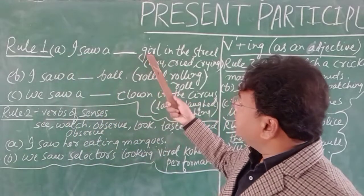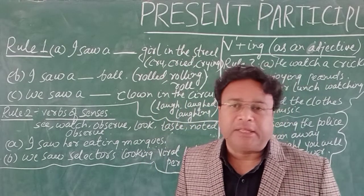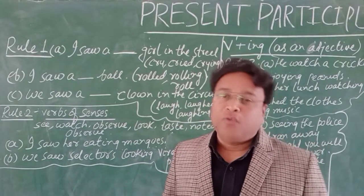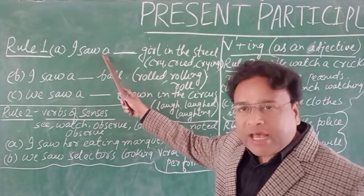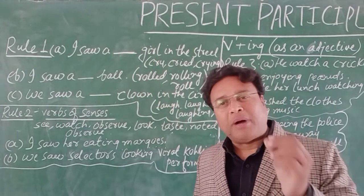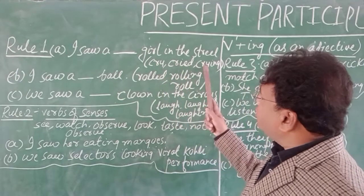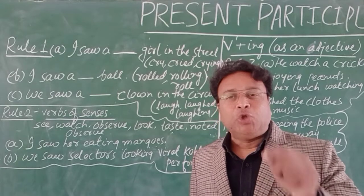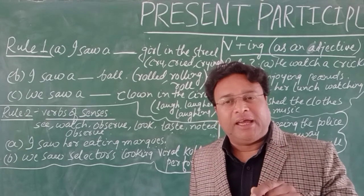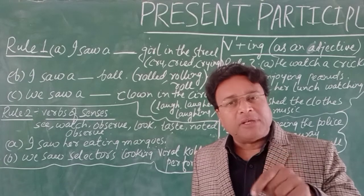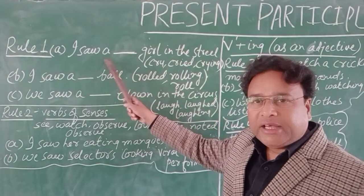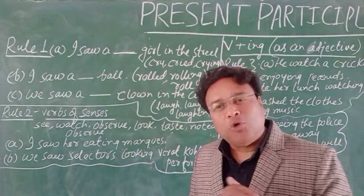یہاں پہلا rule دیکھتے ہیں: 'I saw a girl in the street.' اسے competitive exam میں اس طرح پوچھا جاتا ہے — ایک blank دیا جاتا ہے۔ جب a یا an ہوتا ہے کسی sentence میں اور بعد میں noun ہو، تو ان دونوں کے بیچ میں present participle آتا ہے۔ جیسے: 'I saw a crying girl in the street' — میں نے ایک روتی ہوئی لڑکی کو دیکھا گلی کے اندر۔